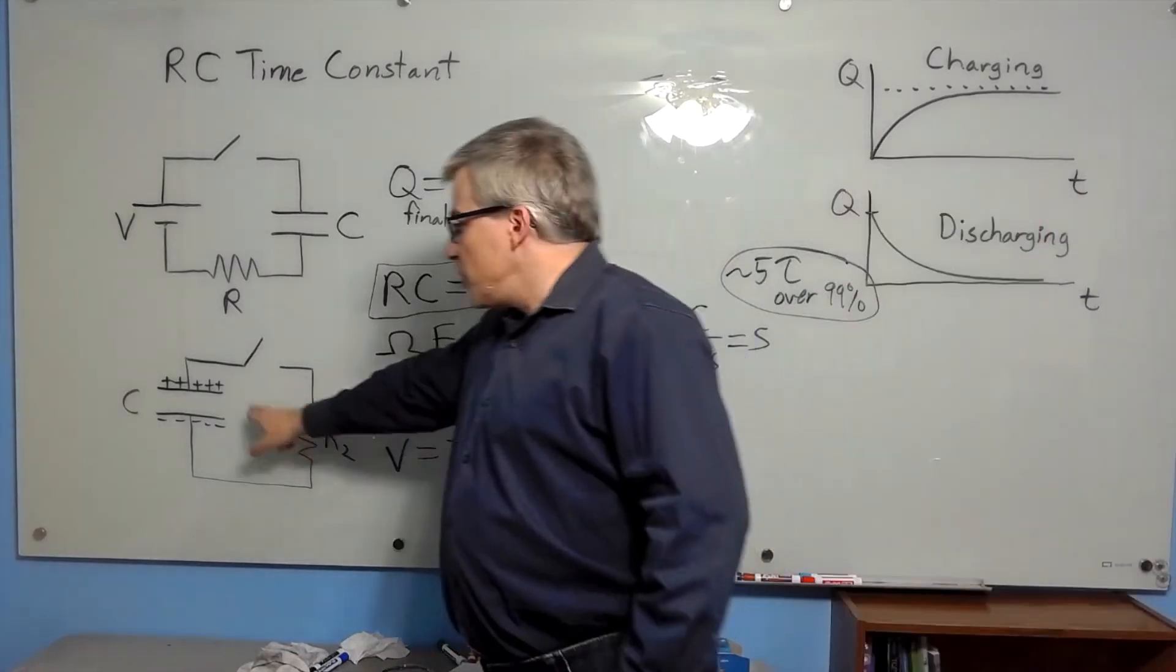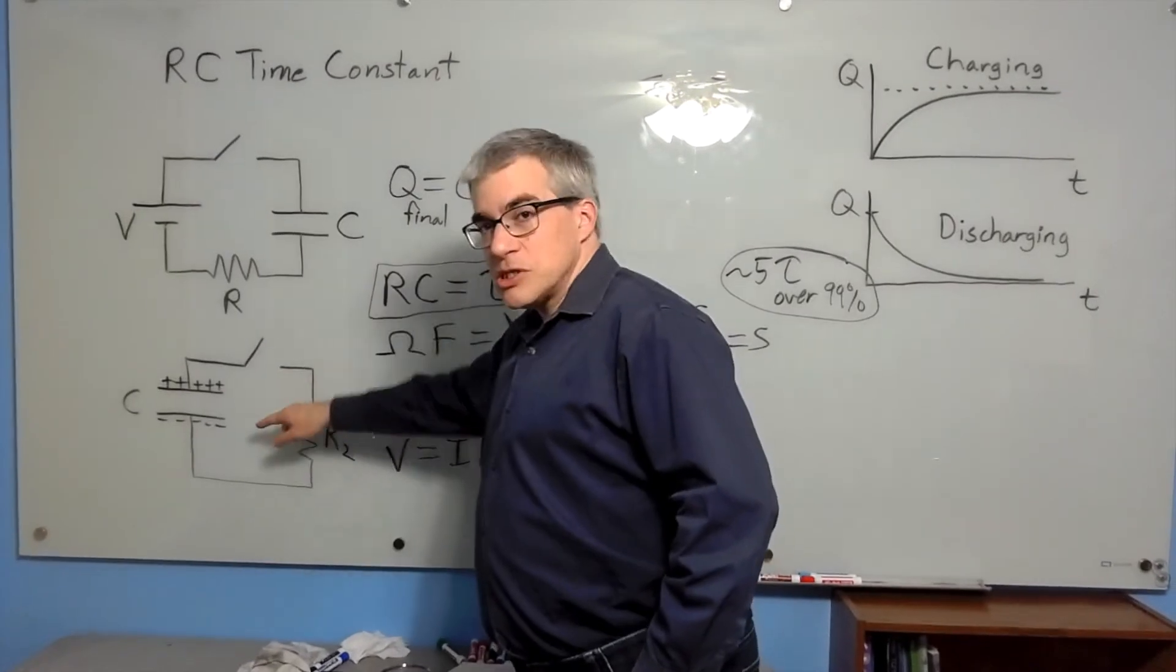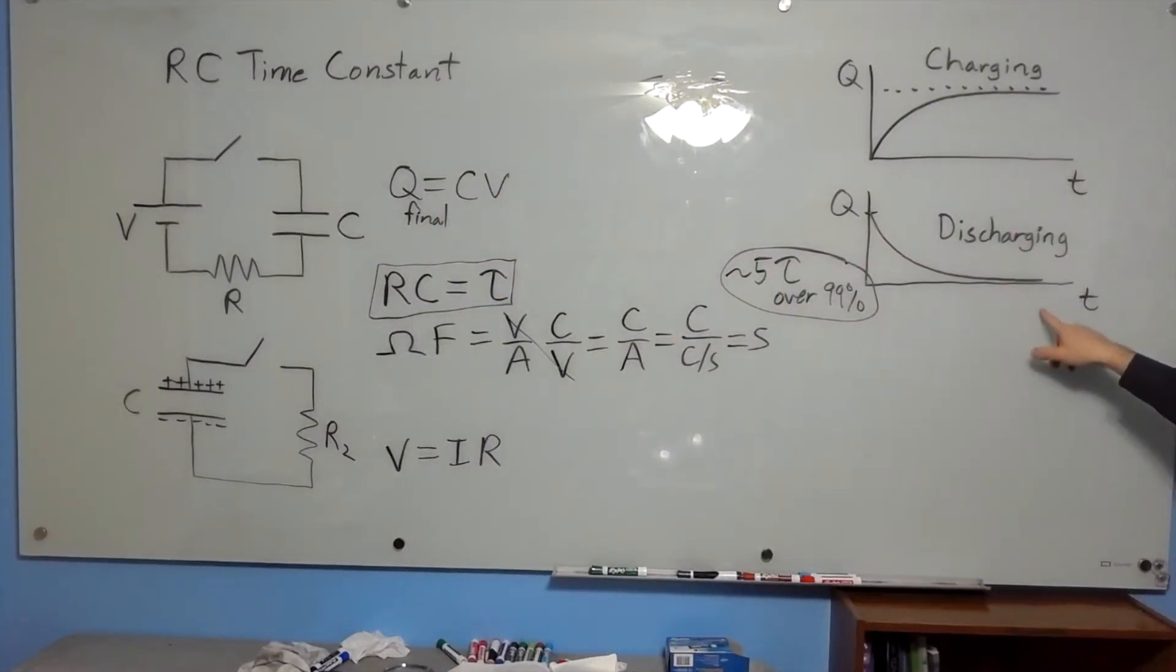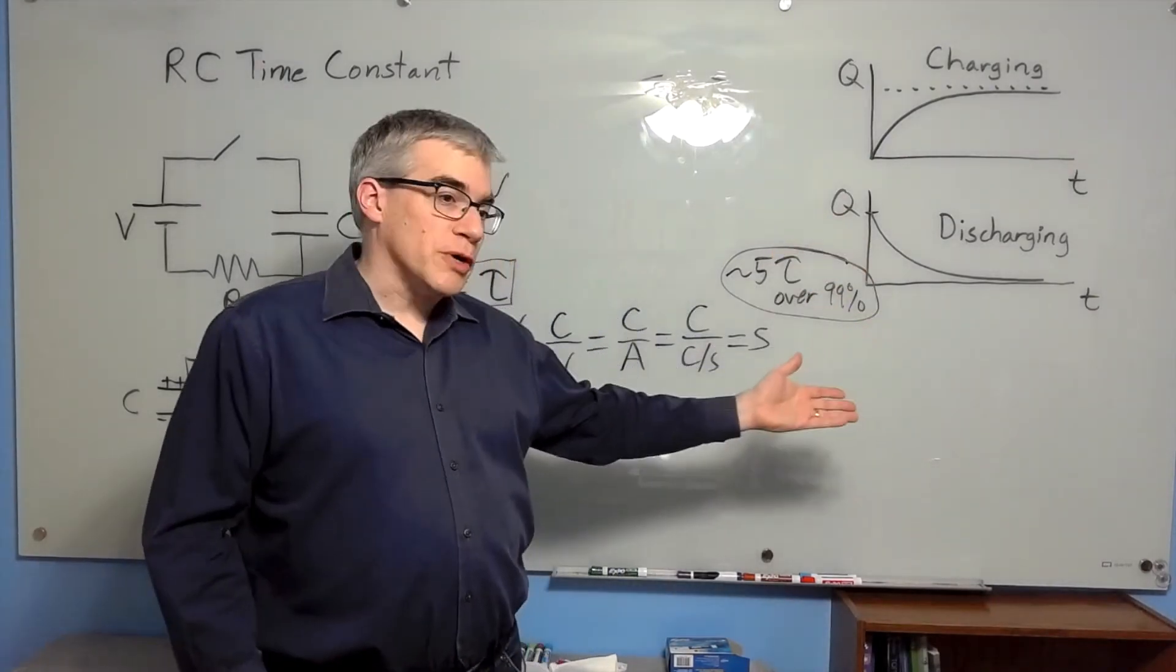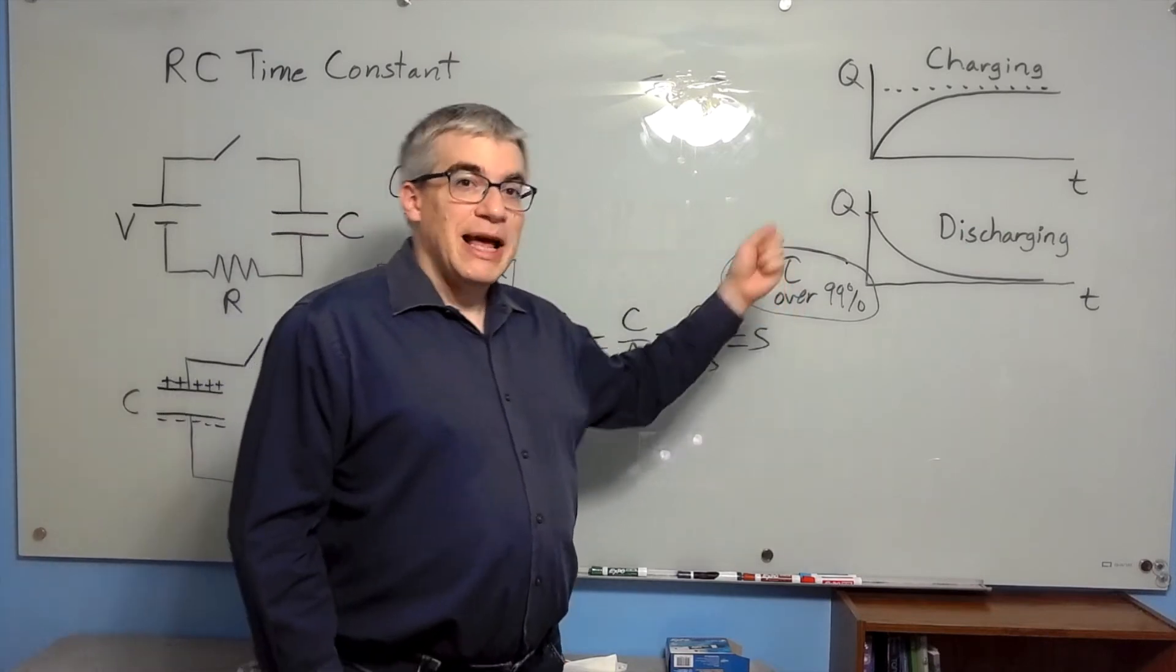So what is the time constant? When you have a discharging capacitor, you've got a charged up capacitor or resistor, you close the switch and the charge flows off. That charge is going to drop off exponentially. You may have seen this kind of exponential decay before, for example, in radioactivity.